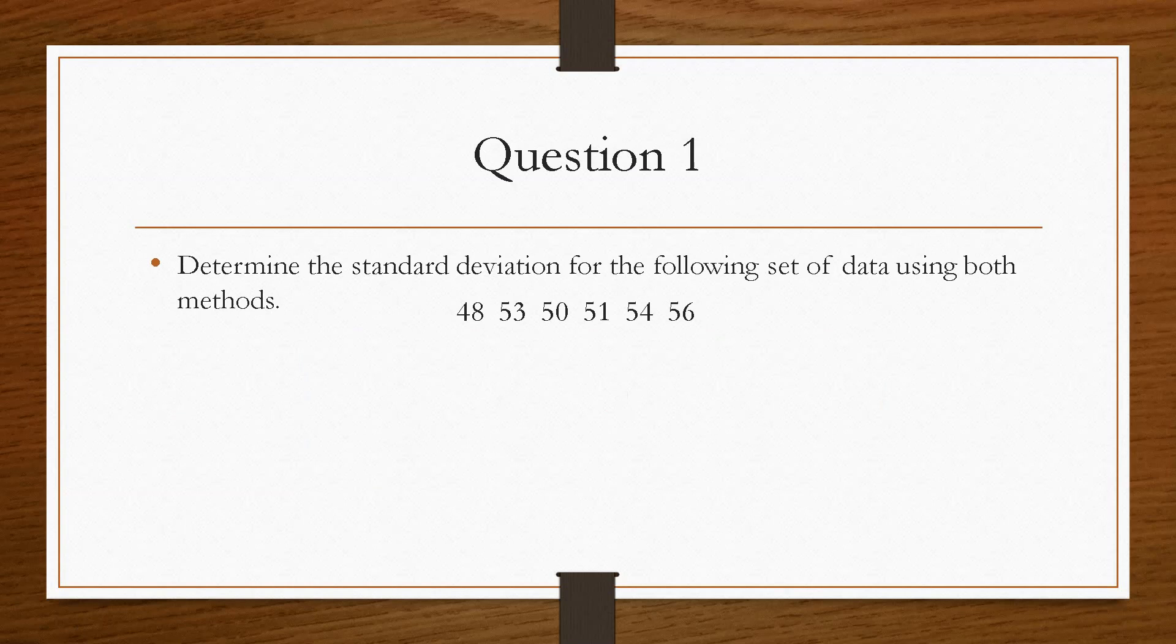So question 1 here says, determine the standard deviation for the following set of data using both methods. So this is our data. Now in both equations, it contained x bar. So regardless of what method we use, we must find x bar or the mean. And the way we do that is we add all the values together and divide by how many we've got. So in this case, we add all of these and divide it by 6 because there are 6 numbers. And this gives us an average of 52.